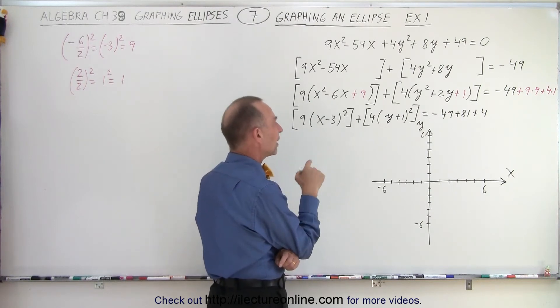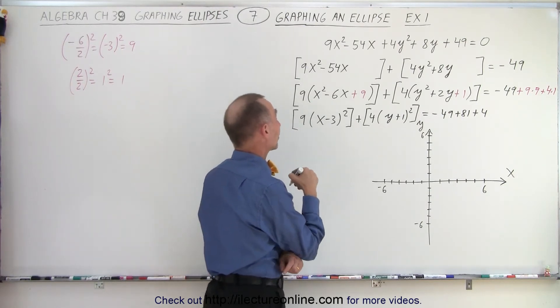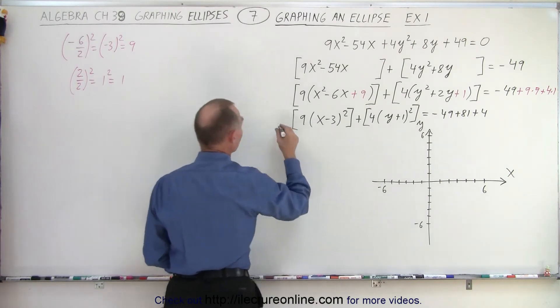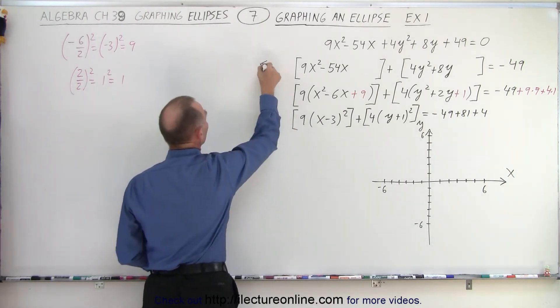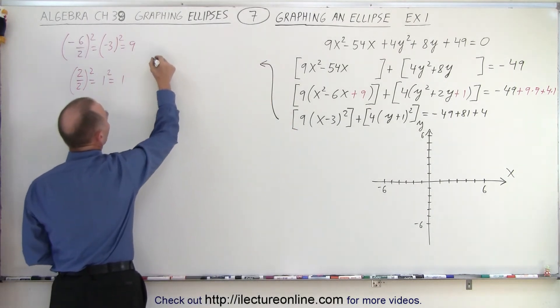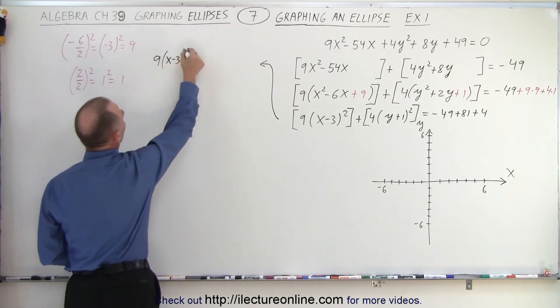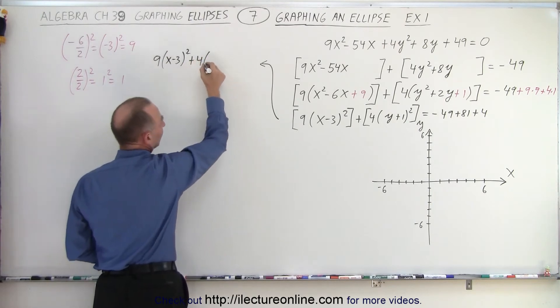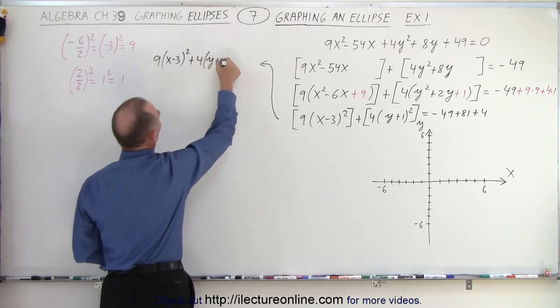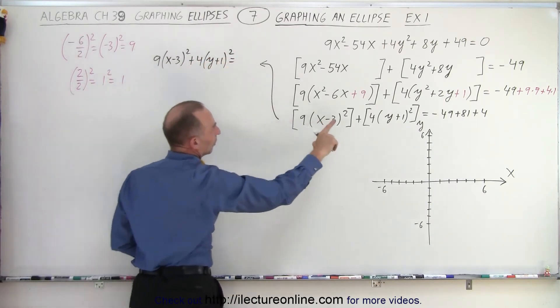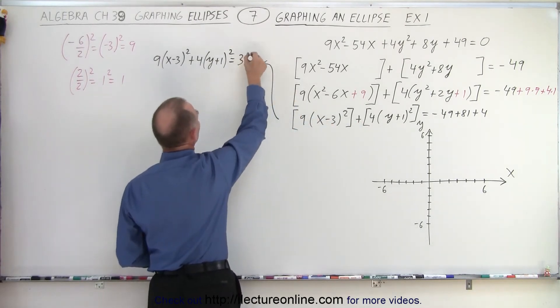That's 85 minus 49, that's 36. Alright, so this can be written as 9 times x minus 3 quantity squared plus 4 times y plus 1 quantity squared, which is equal to when you add all that up you get 36.